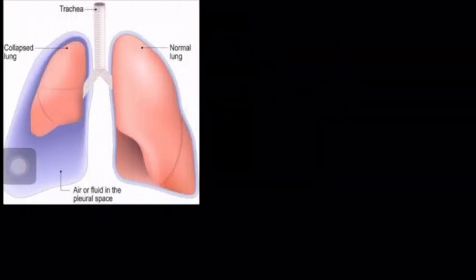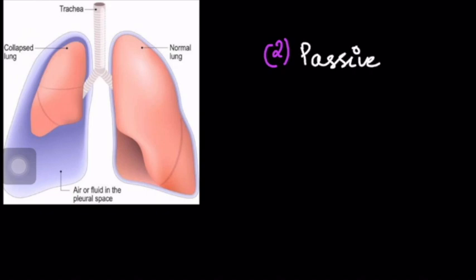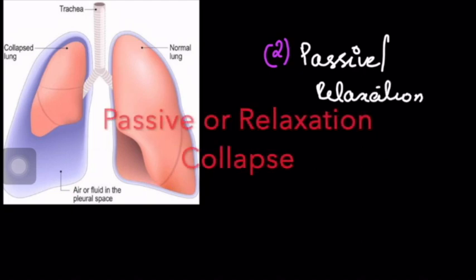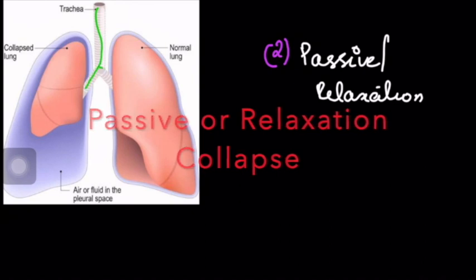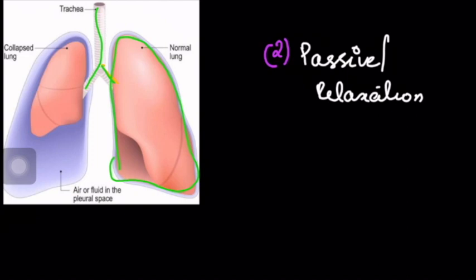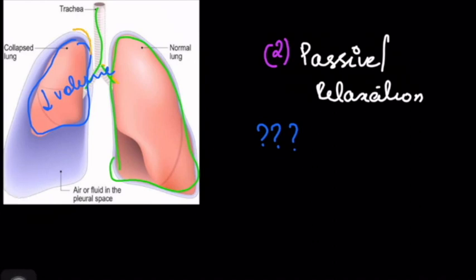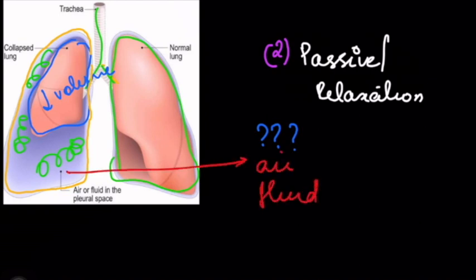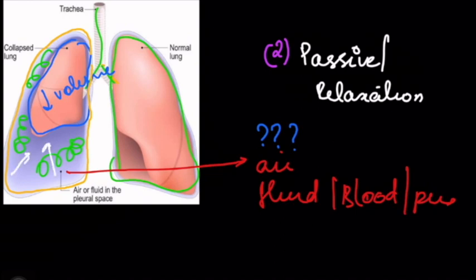The second type is passive or relaxation collapse. In the diagram, the left lung is normal, but the right lung has decrease in volume. Looking carefully, the pleural lining covers the right lung and something is occupying the pleural space — it can be air, fluid, blood, pus, or anything. Something occupying the pleural cavity is exerting pressure on the lung and forcing it to collapse. This is known as passive or relaxation collapse.